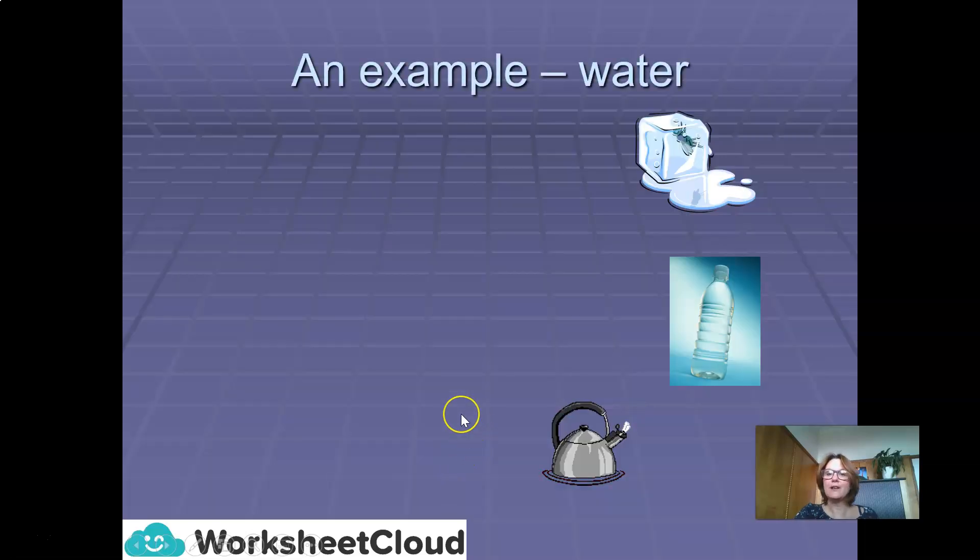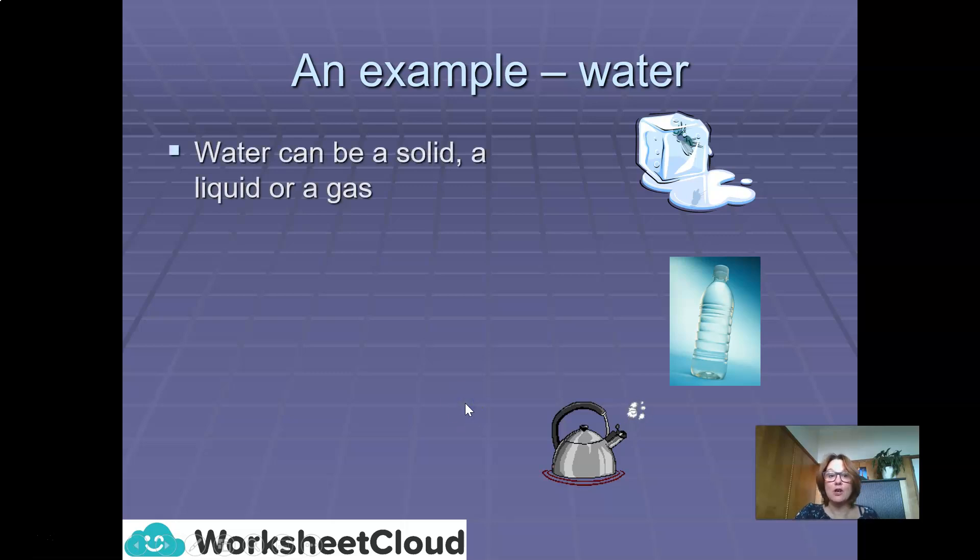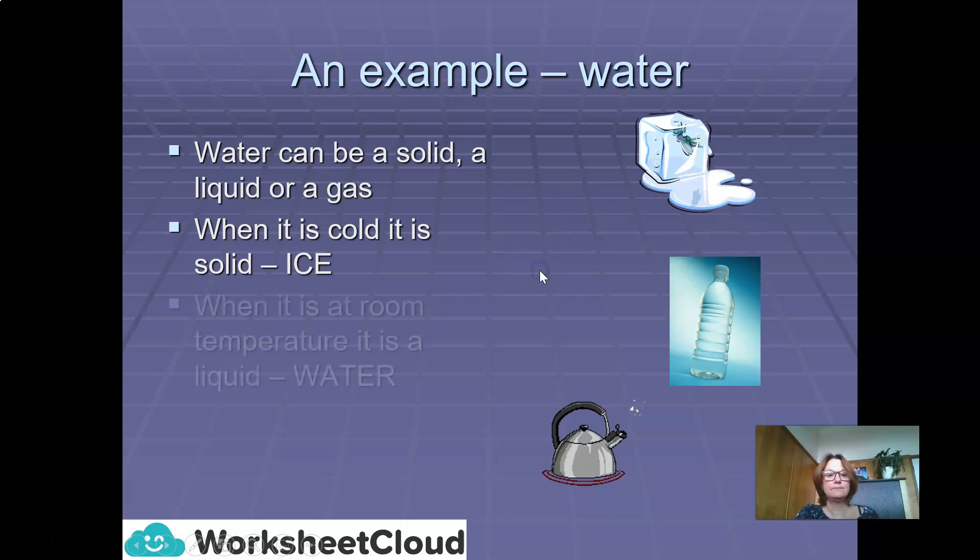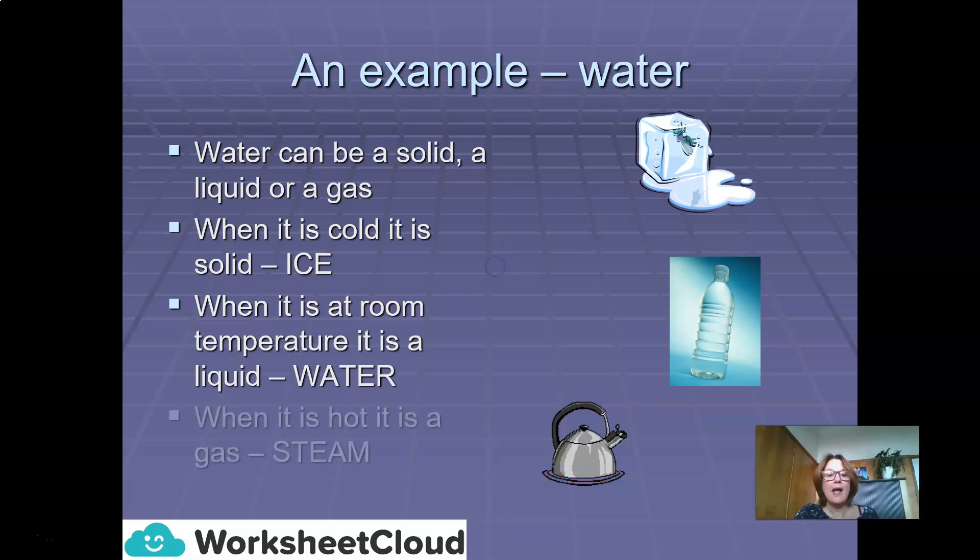Let's take a look at an example of water, which we all know. Water can be a solid, a liquid or a gas. When it is very cold, it is a solid, ice. When it is at room temperature, it is a liquid, water. And when it is hot, it is a gas, steam. I hope that all makes a lot more sense to you now, and you understand how the particles move in order for a change of state.